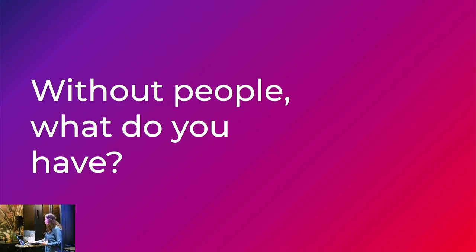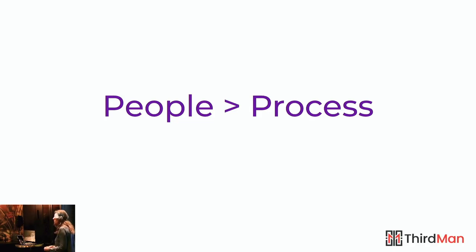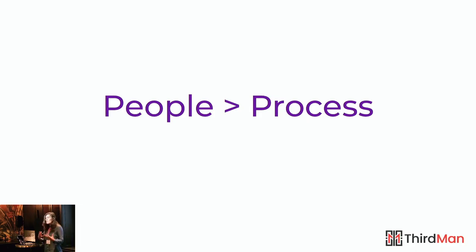It should be co-built because people before process. Just like community over code, people before process. The process has to serve the people involved in the project, or you have nothing. So let's look at how we can co-create and collaborate on governance structures.